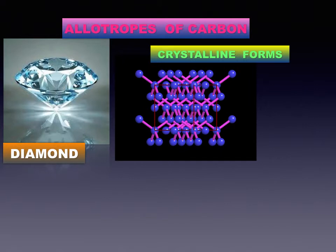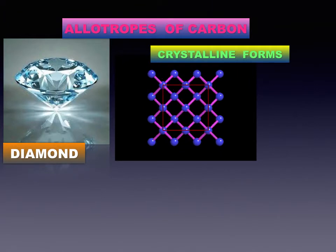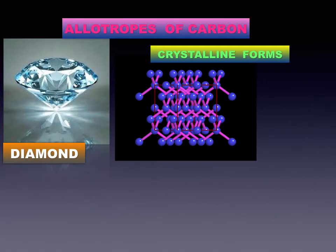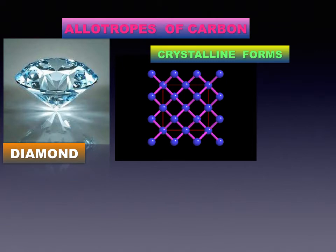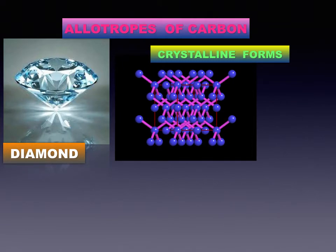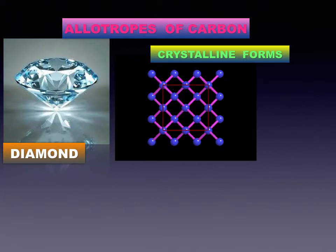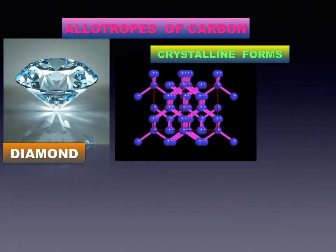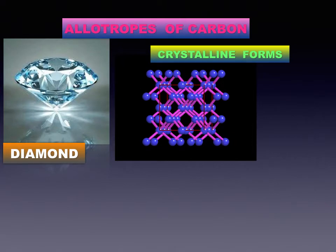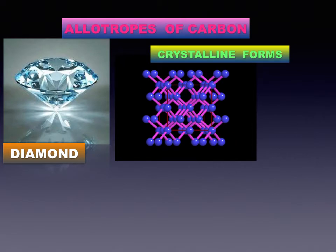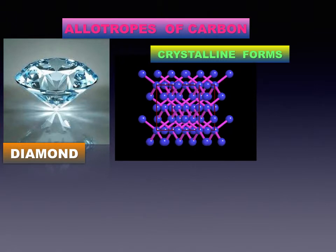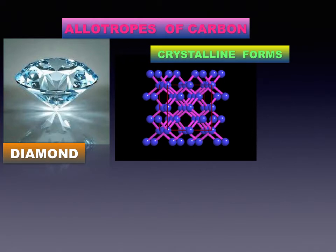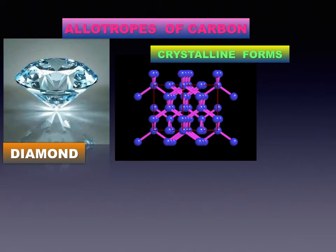The properties of diamond are: it is brilliant, and pure diamond is the hardest natural substance. The density of diamond is 3.5 grams per cubic centimeter. The melting point of diamond is 3,500 degrees Celsius. When diamond is heated at 800 degrees Celsius in the presence of oxygen, carbon dioxide is given off, and no other product besides carbon dioxide is formed. Diamond does not dissolve in any solvent. Acids and bases have no effect on diamond. Diamond is a bad conductor of electricity as it does not have free electrons.